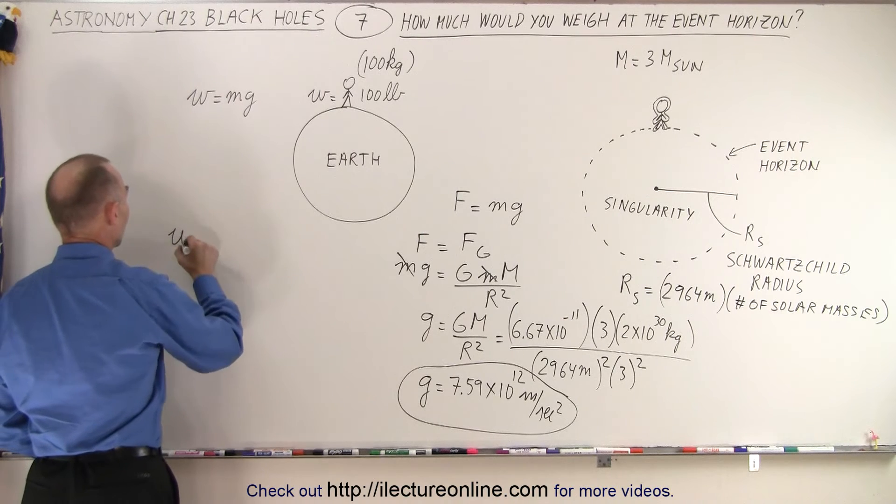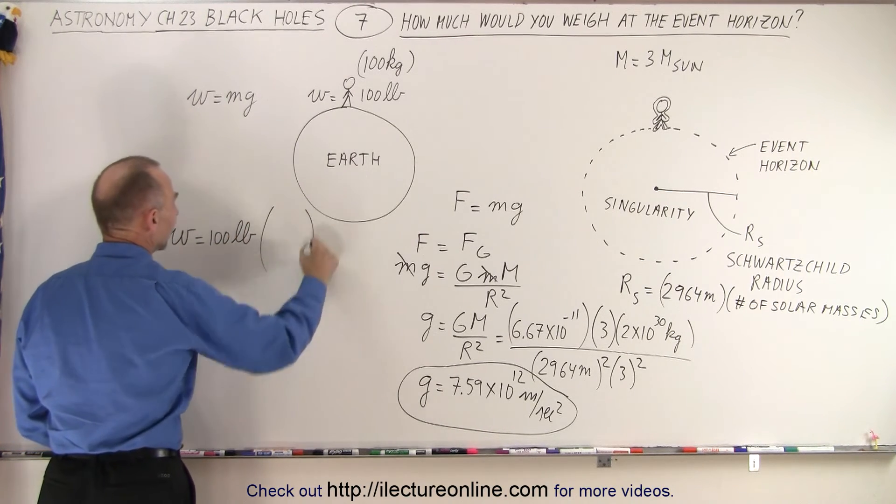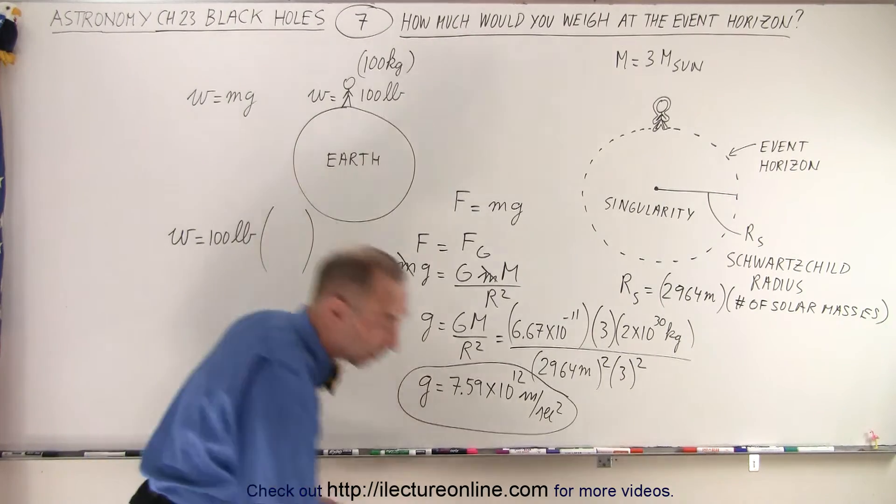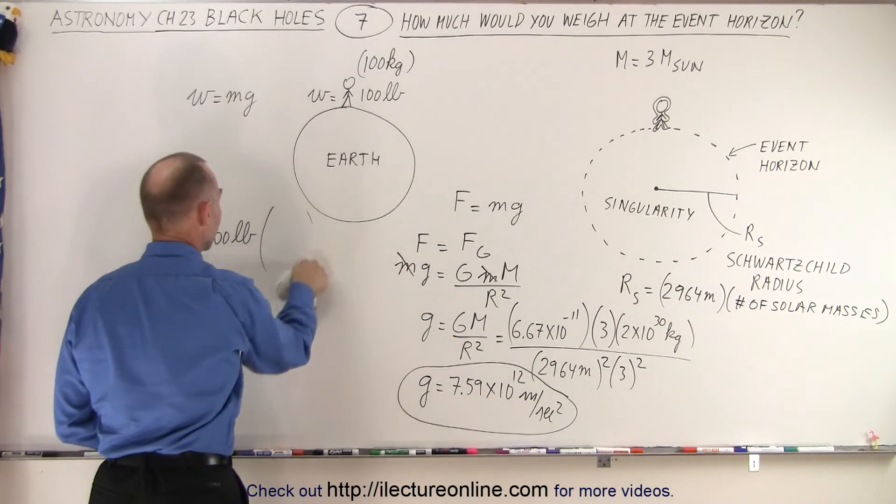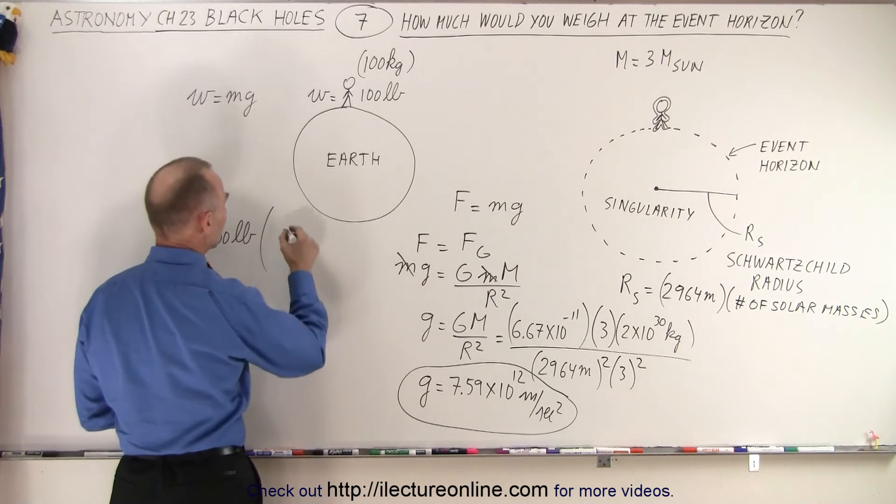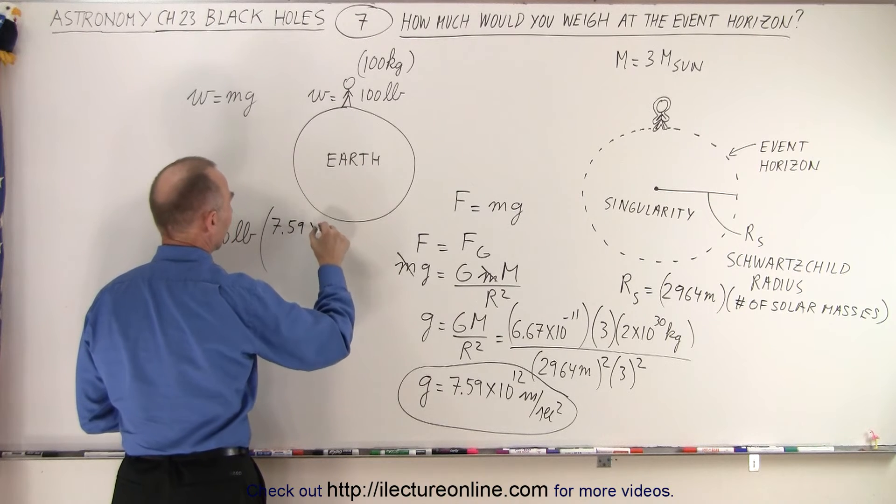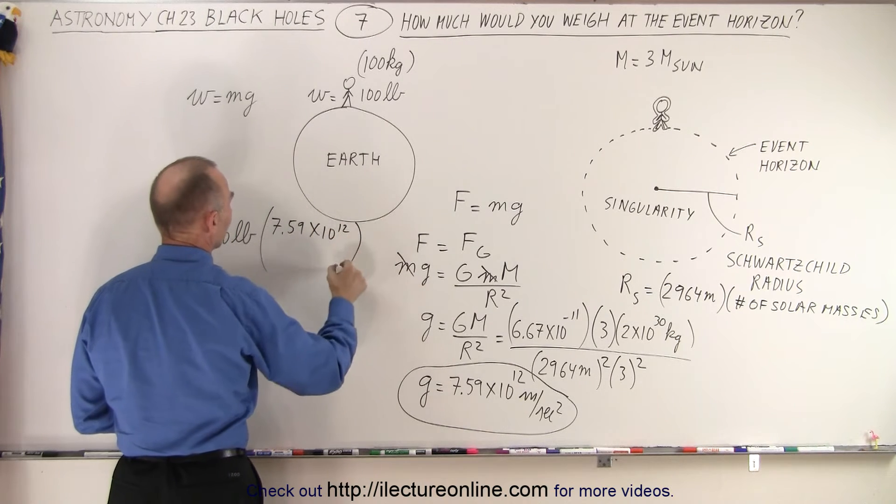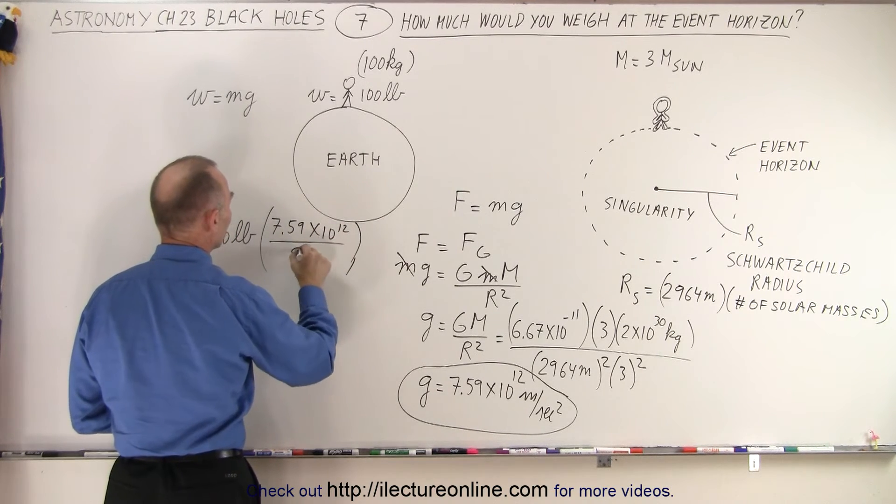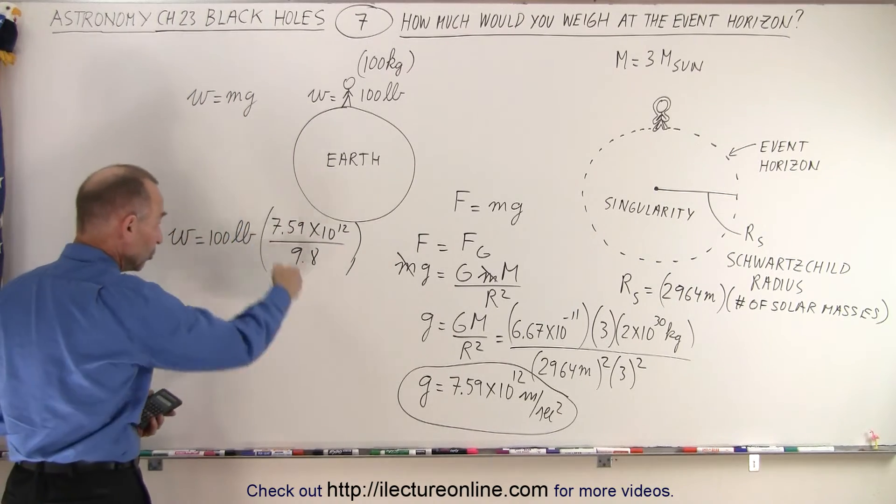So therefore your weight would be equal to 100 pounds, multiply times the ratio, and of course I need a lot more space than that because that's a big number. Let me make that a little bit bigger. So times the ratio of the new g, which is 7.59 times 10 to the 12th, and then divide that by the old g, which is 9.8 meters per second squared. So that's the new ratio.